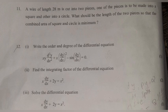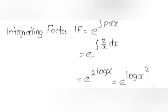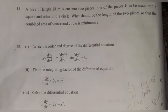Part 2. Find the integrating factor of the differential equation. Given: x dy/dx + 2y = x². Dividing by x: dy/dx + 2y/x = x. This is of the form dy/dx + Py = Q, where P = 2/x and Q = x.